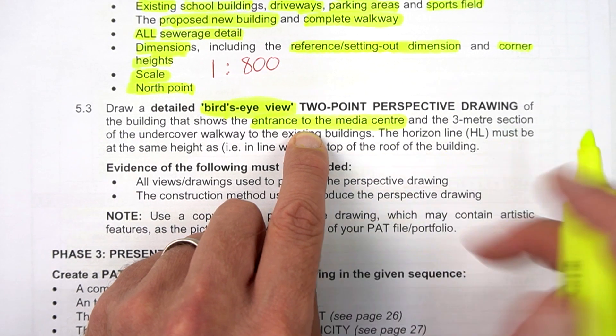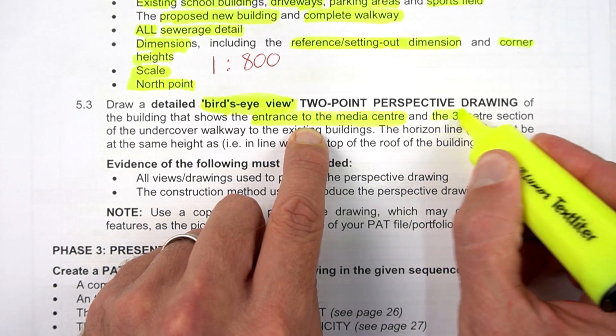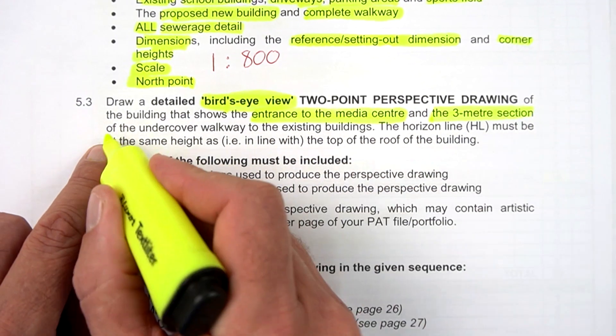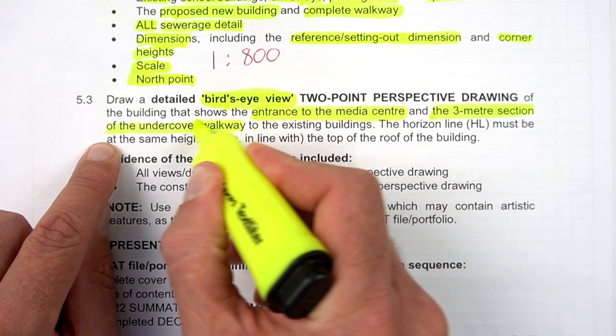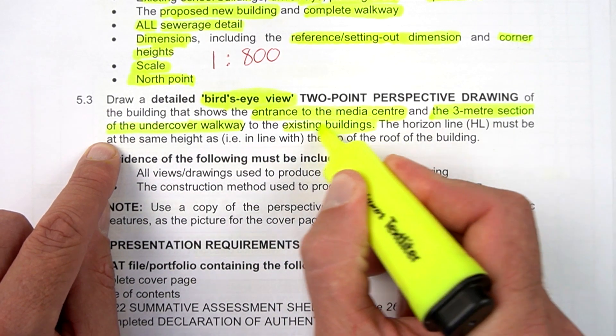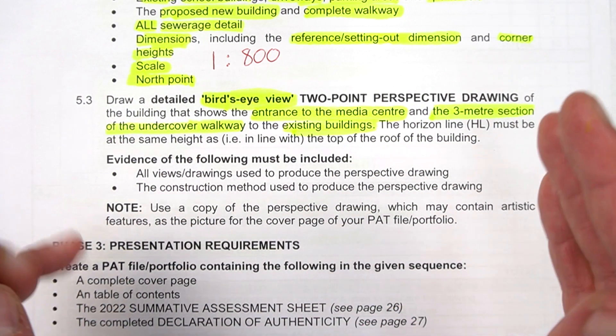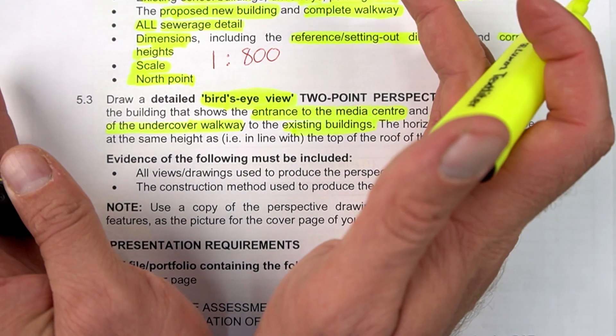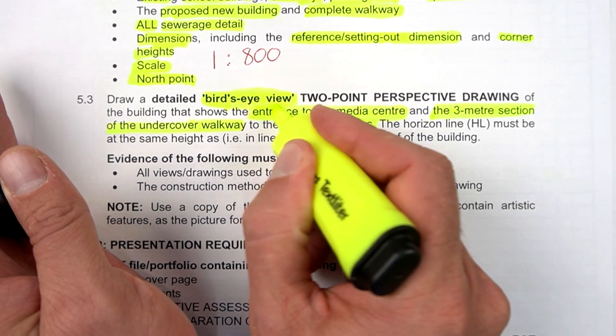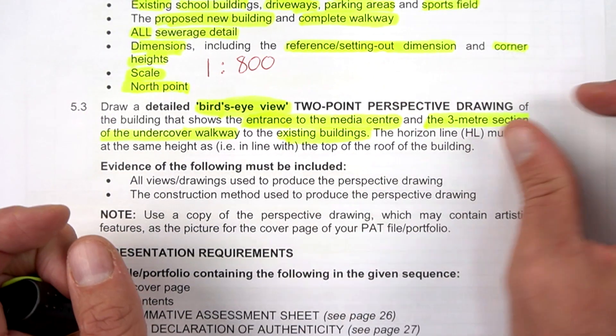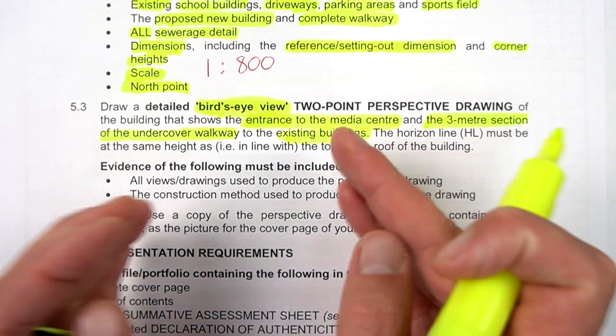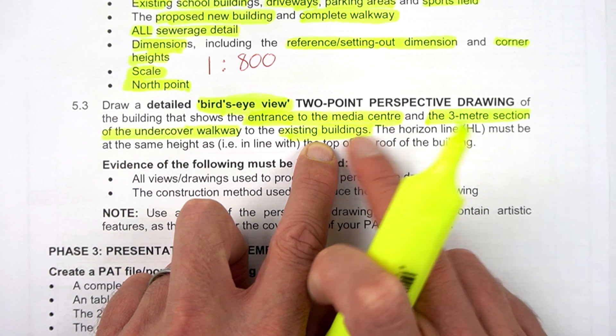Include a three meter section of the undercover walkway leading to the existing buildings. So you're going to be zooming out. You're going to include the entire media center, the entrance part of that media center, and you're going to show a three meter section going towards the existing building. So not the complete walkway, only a partial part.